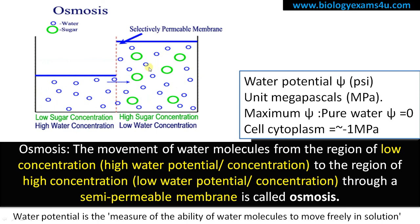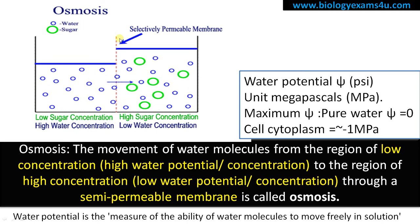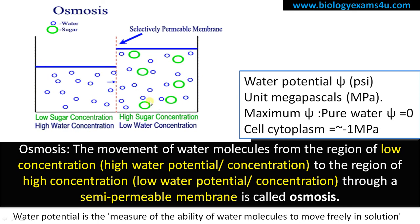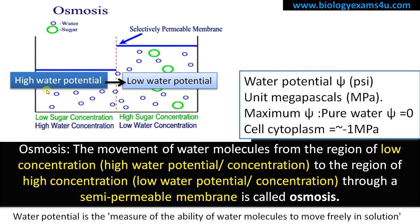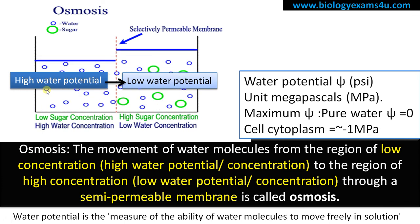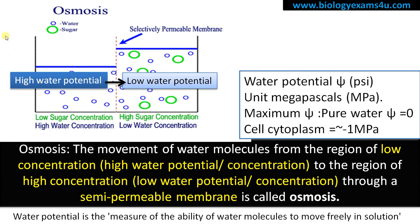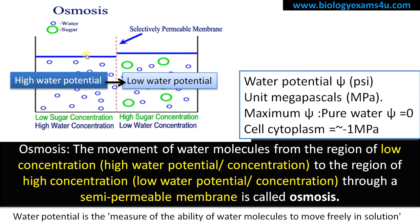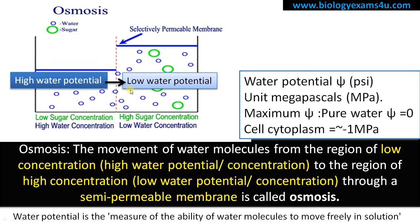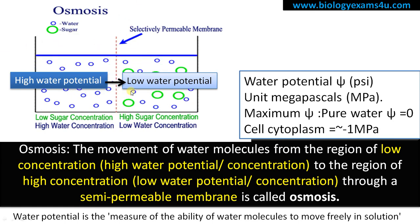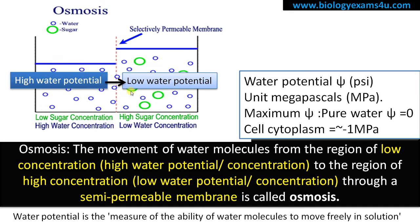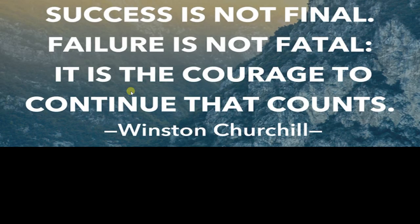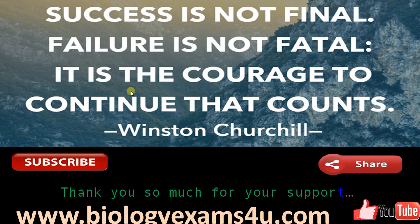So, osmosis in terms of water potential is the movement of water molecules from the region of high water potential to the region of low water potential through a semipermeable membrane. Hope the concept is clear. Thank you so much for your attention. You are with biology exams4u.com — stay tuned for more videos.